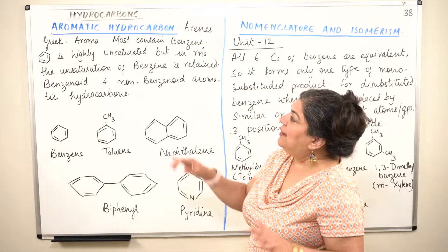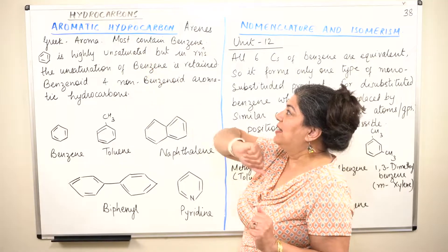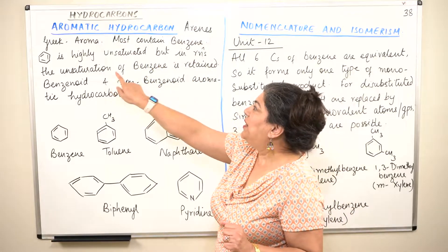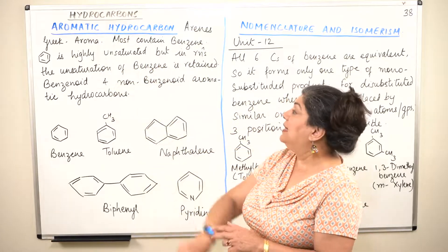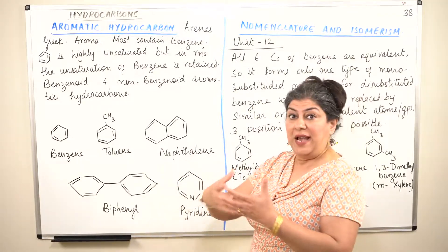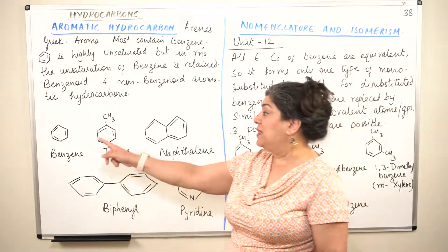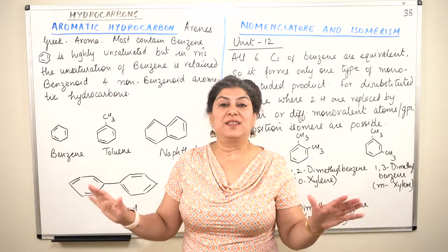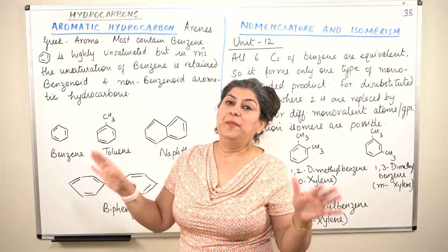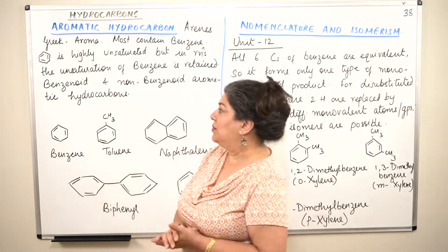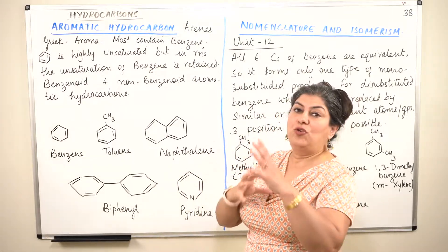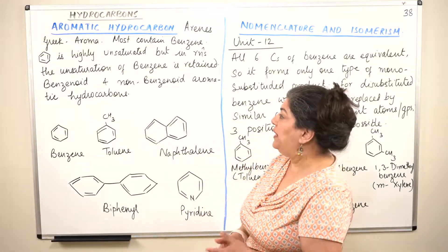Benzene is highly unsaturated but in reactions, the unsaturation of benzene is retained. In other words, when the reaction takes place, the unsaturation remains as such — the three double bonds remain undisturbed, they do not break and do not undergo any change.